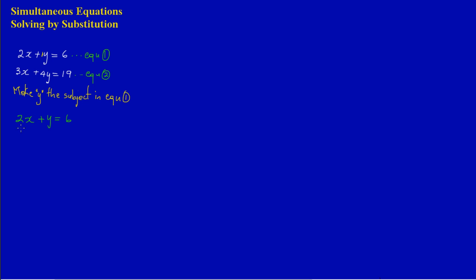I must transpose, so I'm going to take 2x to the other side. Since 2x is being added, I do the opposite — subtraction. I subtract 2x from both sides of the equation. A positive 2x cancels out with a negative 2x, so I am left with y is equal to 6 minus 2x. I can call that equation 3.